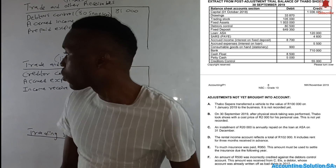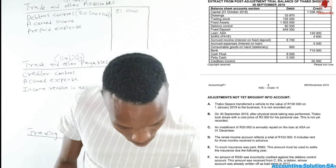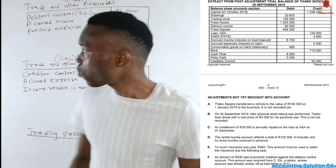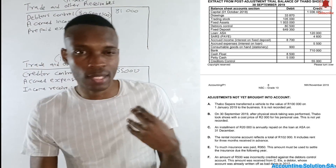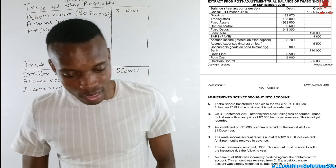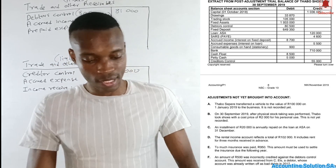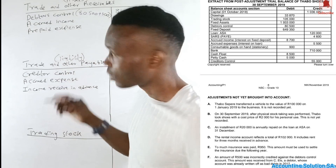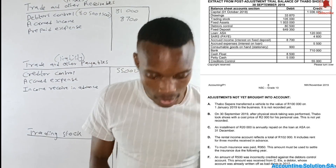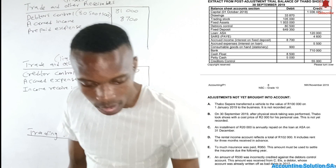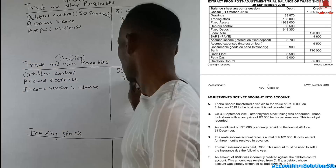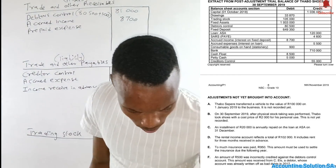We also have creditors control of 55,000 on the trial balance, and we need to check for adjustments. We have accrued income of 8,700 on the debit side, which means it is an asset under trading other receivables. We also have accrued expense on the credit side, which means it is a liability — 5,000 under trading other payables.